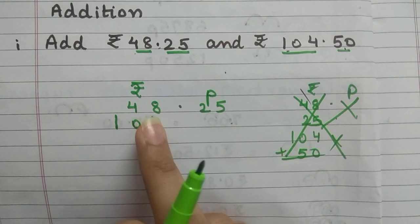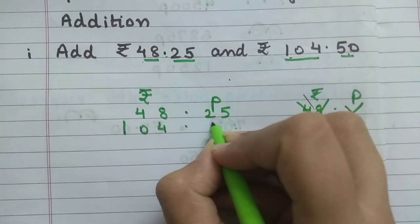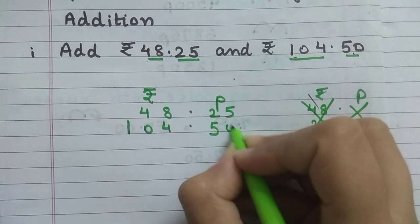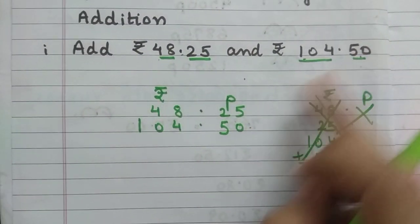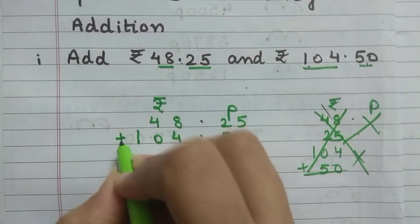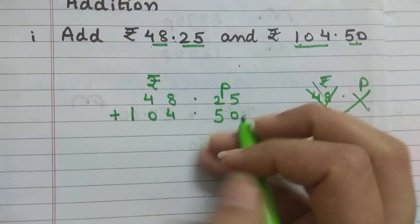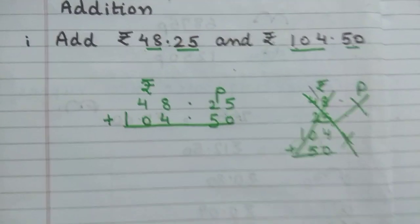Hundreds value will be here, tens and ones. And 50 paisa, decimal, 50 paisa. Decimal under decimal. And 50 paisa. Now we will put the sign of addition and add like normally.